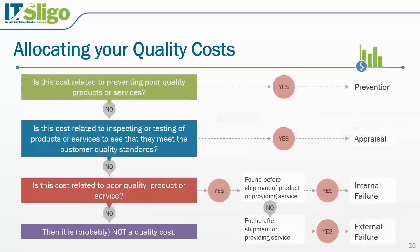To determine whether a cost is prevention, appraisal, or failure: ask if the cost is related to preventing poor quality products or services — if yes, it's a prevention cost. If it relates to inspecting or testing products or services to meet customer requirements — it's an appraisal cost. If it's related to poor quality product or service, it's a failure cost — internal if found before shipment, external if found after. If none of these, it's probably not a quality cost.